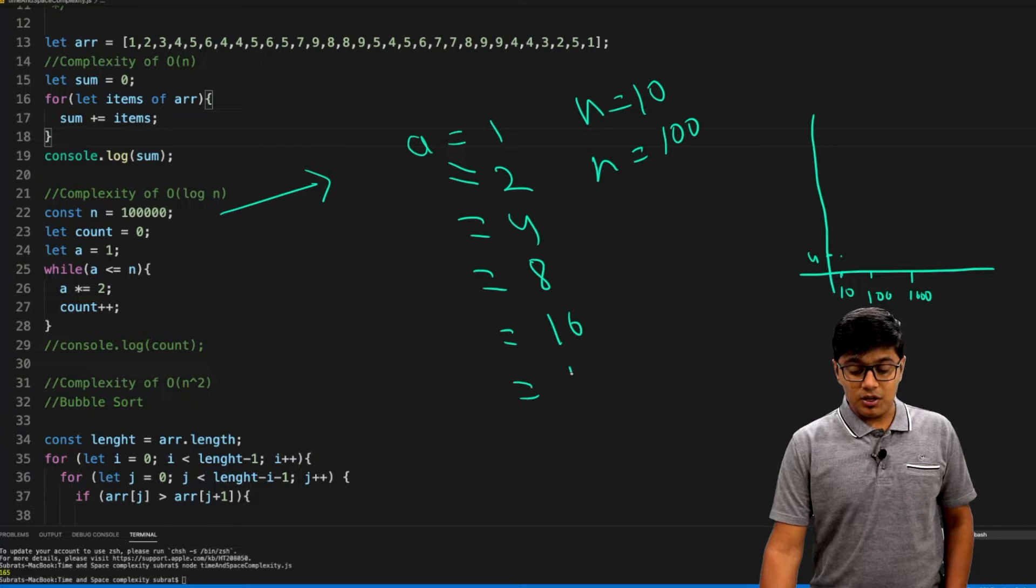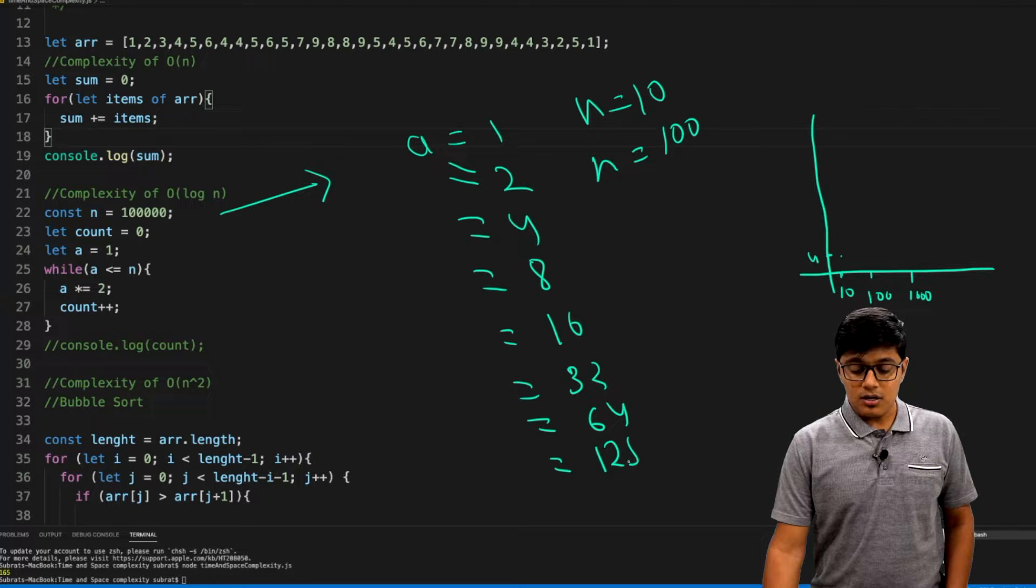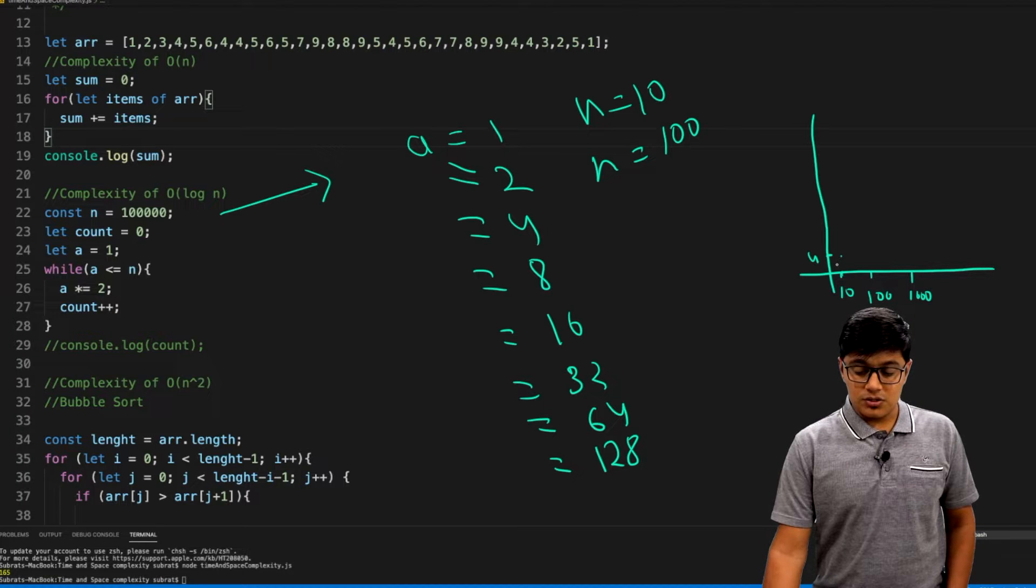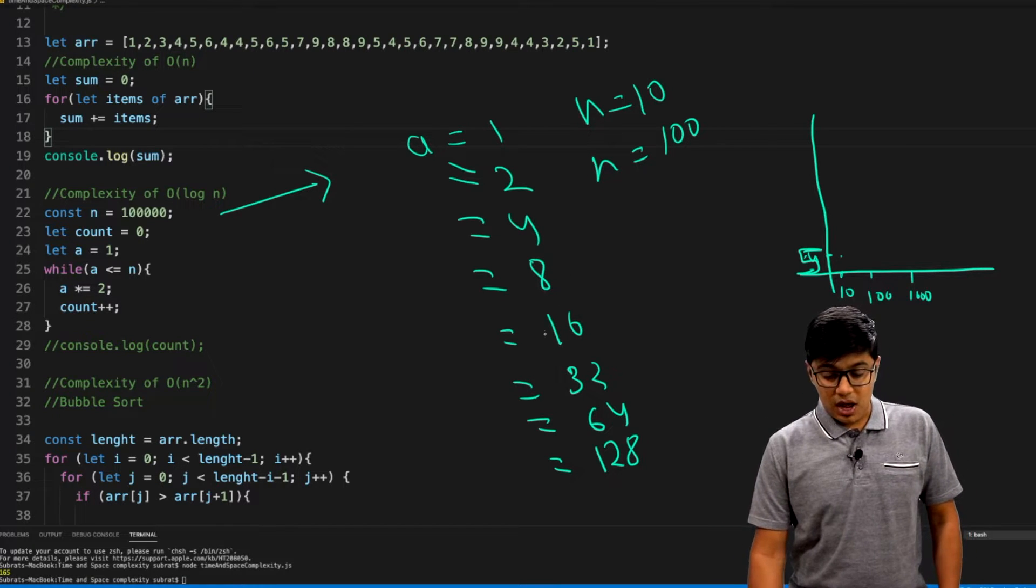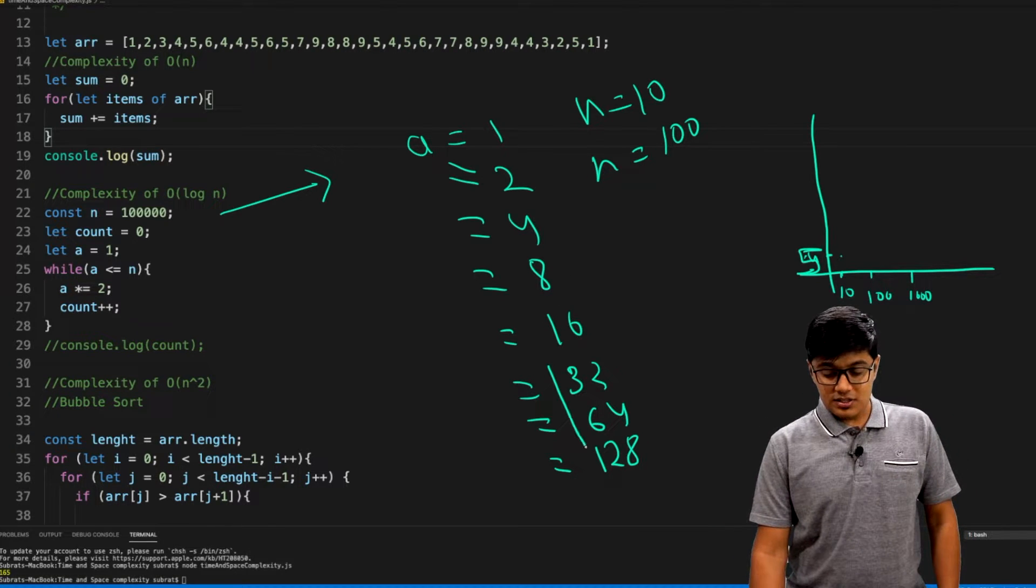It becomes 4, then 8. When n equals 10, we ran just four times. Now if I make n to 100, it will become 16, then 32, then 64, then 128. So first here it should be 0, 1, 2, 3, 4, so five steps. Sorry, I was wrong.